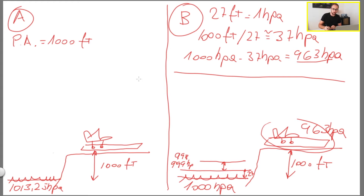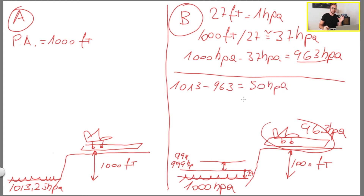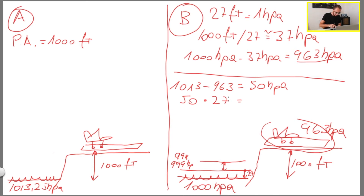We take 1013 minus 963 — that's the pressure around the airplane — and that gives us 50 hectopascals. This is the difference between the standard 1013 and the pressure around the aircraft. Then we take those 50 hectopascals and multiply by 27, because we know that for each hectopascal there are 27 feet of altitude difference. 50 multiplied by 27 gives us 1350 feet.